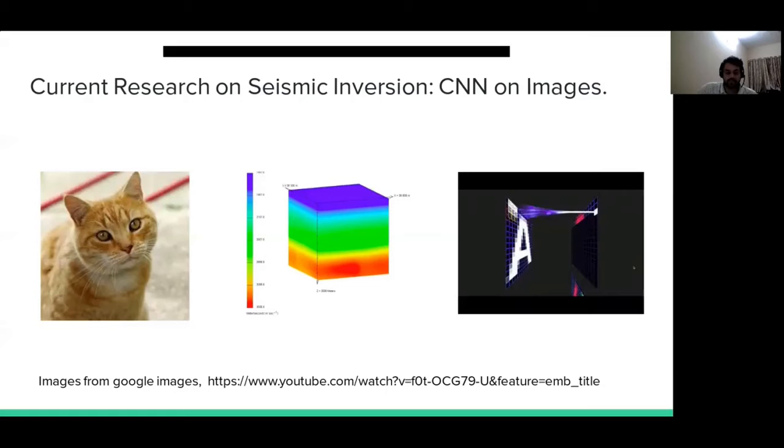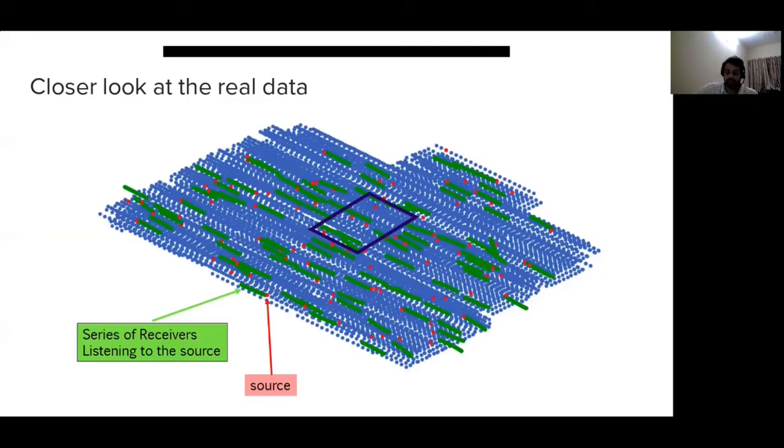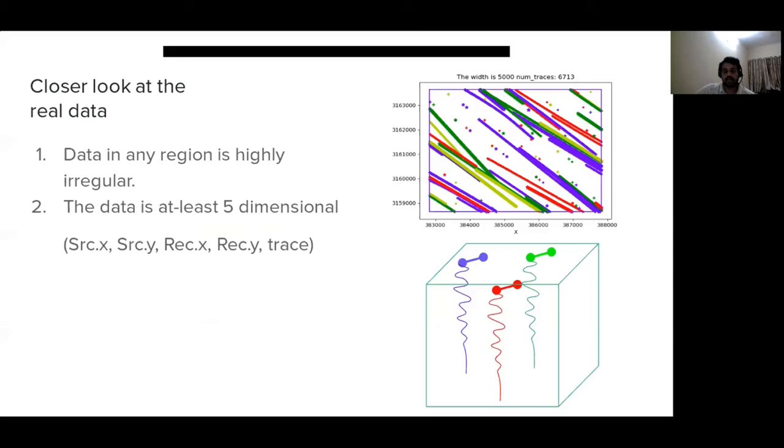However, if you look at the real data and focus on a smaller area, it looks something like this. On the figure on the right, the small dots in this image are basically the locations for shots, and the corresponding colored lines are basically the receiver lines for this particular shot. As you can see, this data is nowhere regular. It does not share a highly structured geometry, and if you move this window around, you would probably see varying acquisition geometries and even the number of traces might vary.